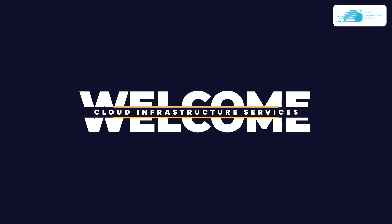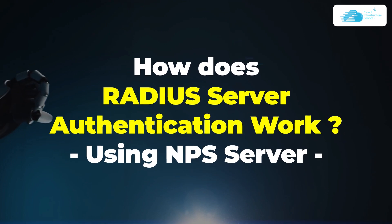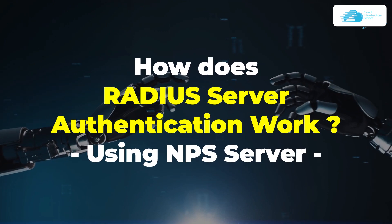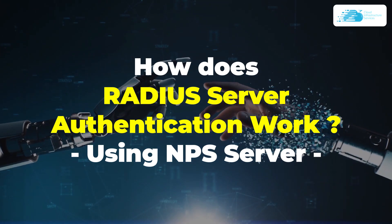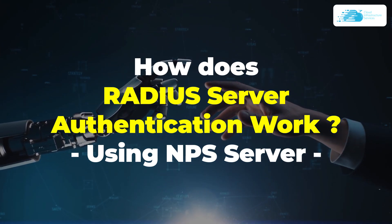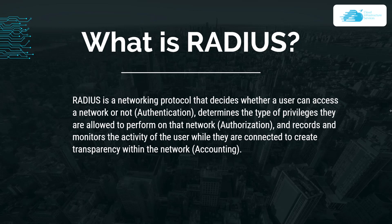Welcome to the Cloud Infrastructure Services YouTube channel. In this video we are going to talk about how RADIUS server authentication works using an NPS server. RADIUS is a network protocol that decides whether a user can access the network — the process of authentication — then determines the type of privileges they are allowed to perform on that network, which is authorization, and records and monitors user activity while connected, which is accounting.